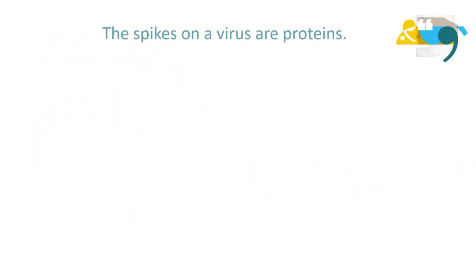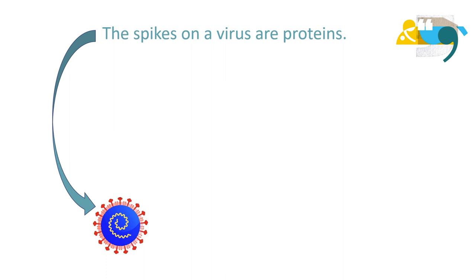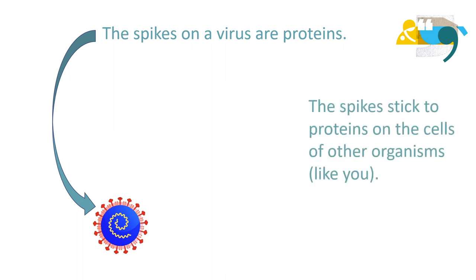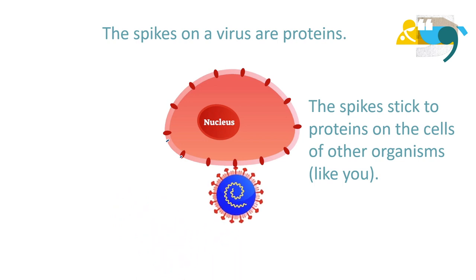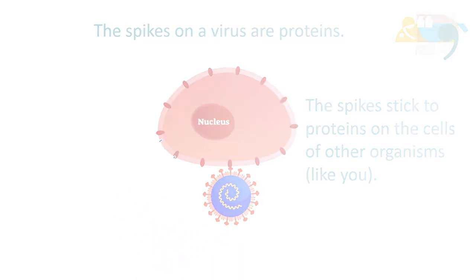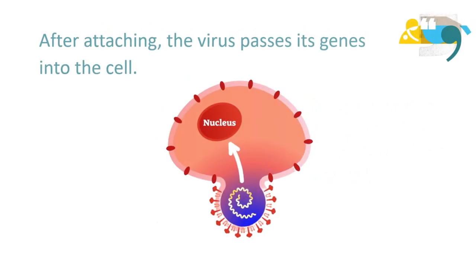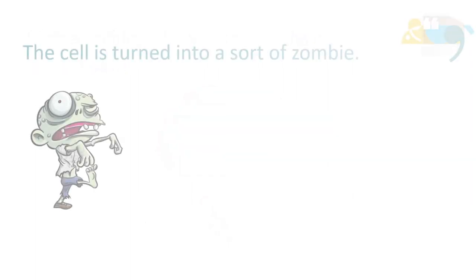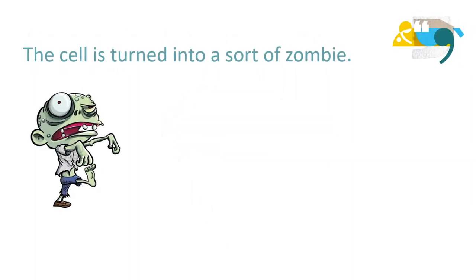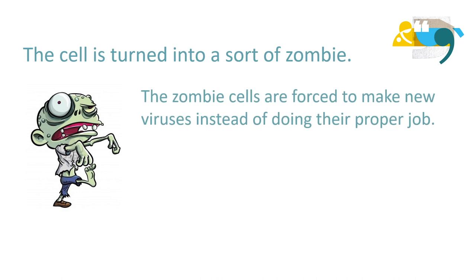The spikes on a virus are proteins. The spikes stick to proteins on the cells of other organisms, like you. After attaching, the virus passes its genes into the cell. The cell is turned into a sort of zombie — the zombie cells are forced to make new viruses, instead of doing their proper job.